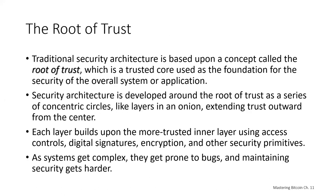Let's talk about the root of trust. Traditional security architecture is based upon a concept called the root of trust, which is a trusted core used as a foundation for the security of the overall system or application. Security architecture is developed around the root of trust as a series of concentric circles, like layers in an onion, extending trust outward from the center. Each layer builds upon the more trusted inner layer using access controls, digital signatures, encryption and other security primitives.